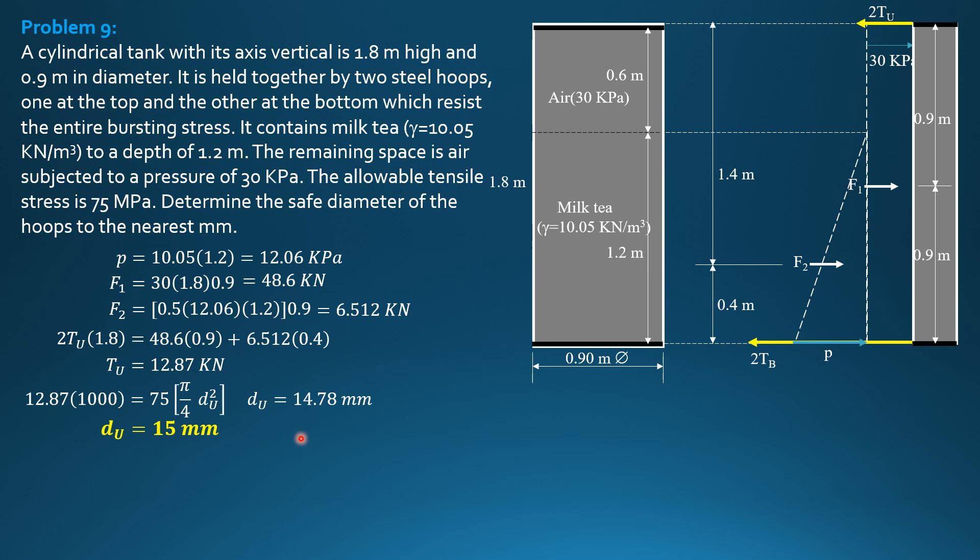Then for the bottom hoop, summation of moments about the upper hoop equals zero. So 2 times T in the bottom hoop times 1.8 equals F1, 48.6 times 0.9 plus F2, 6.512 times 1.4. Solving for tension in the bottom hoop, 14.68 kilonewtons.